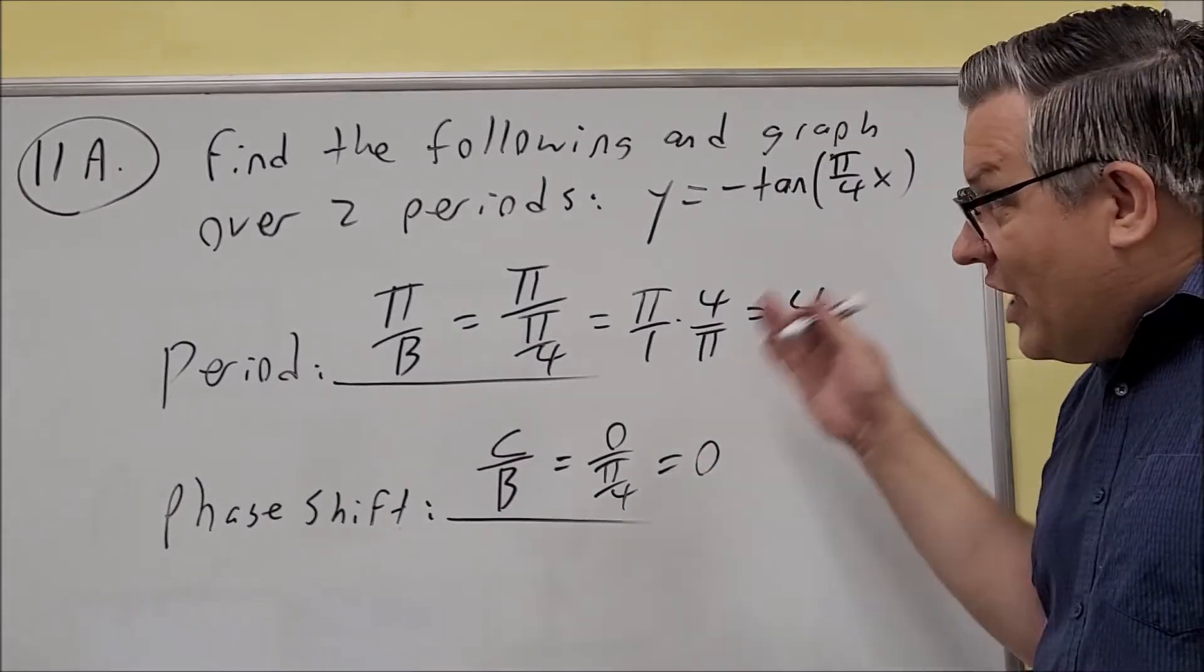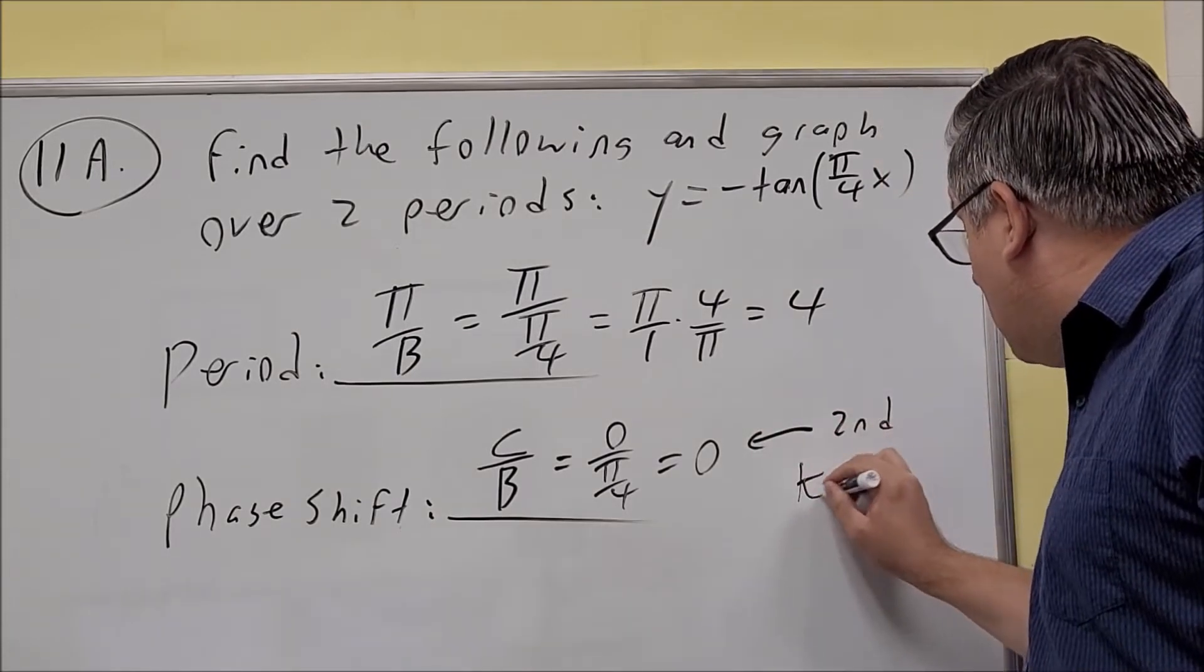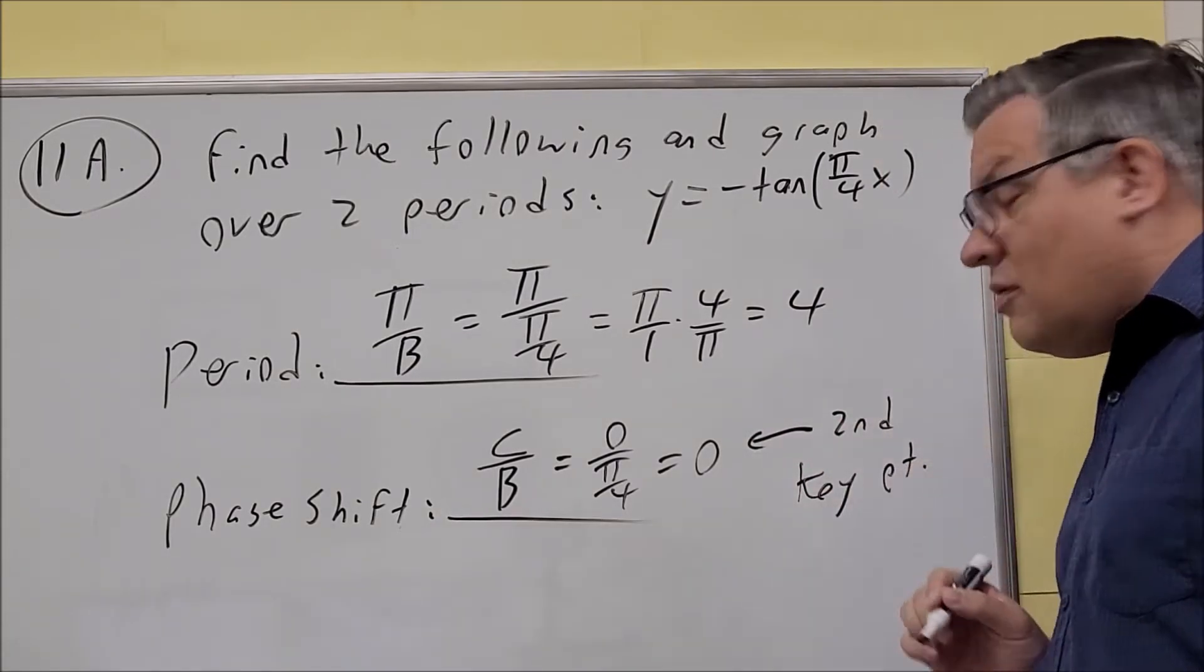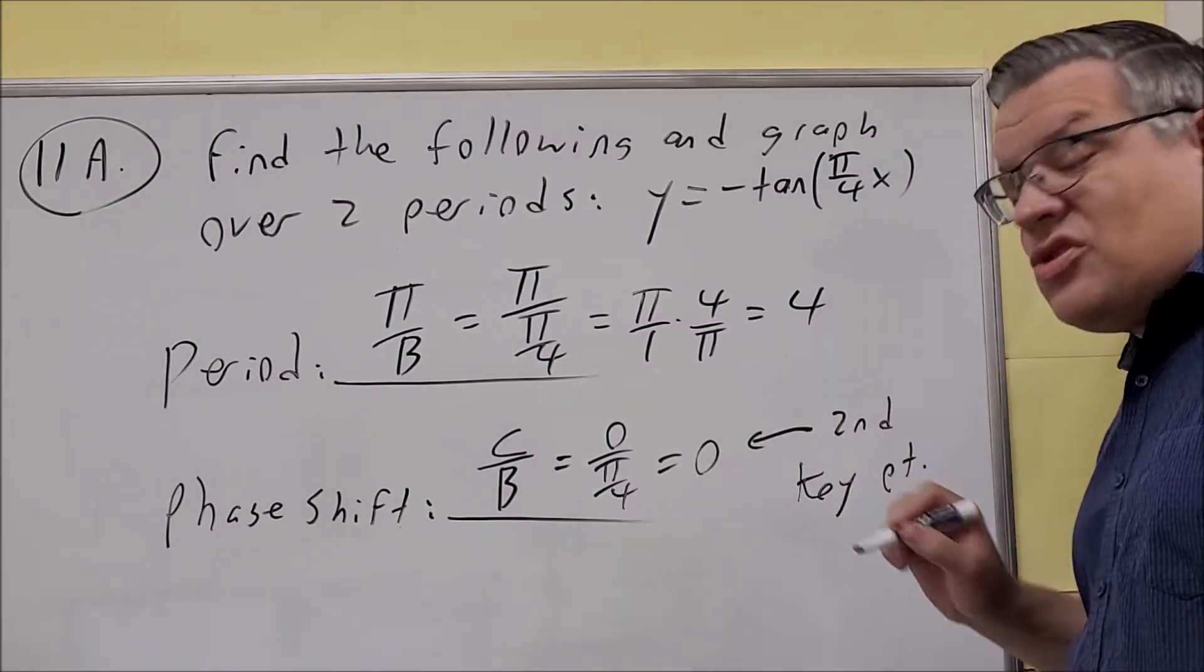Now for tangent graphs, this is the second key point. So when you find the phase shift, that's your second key point.